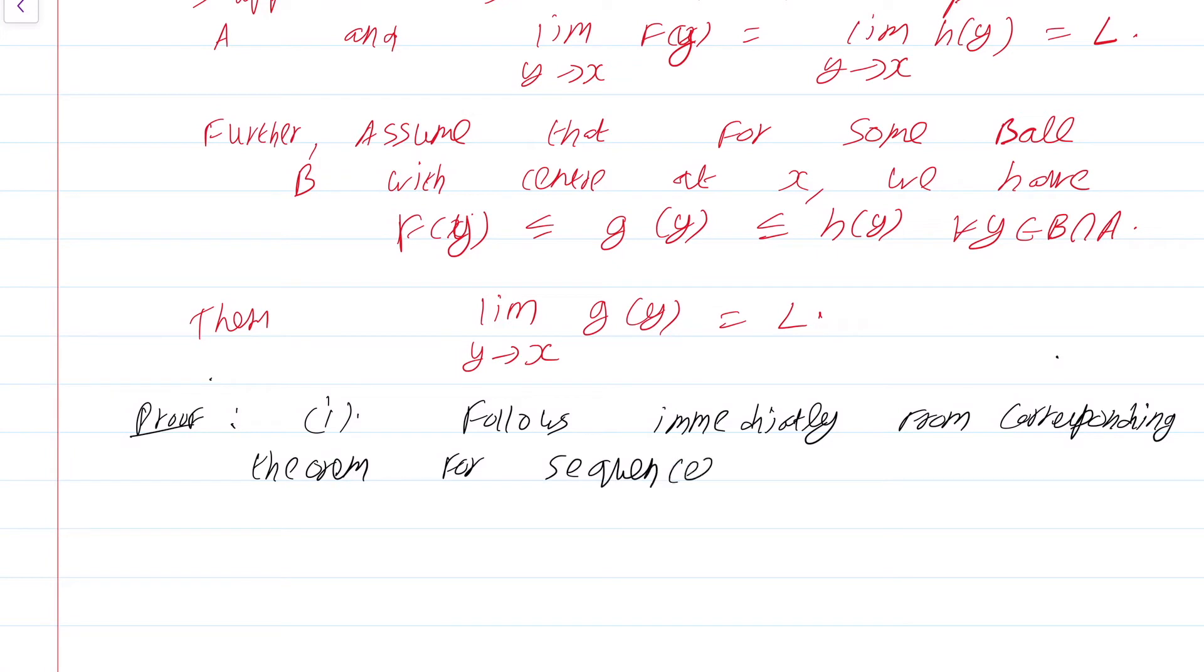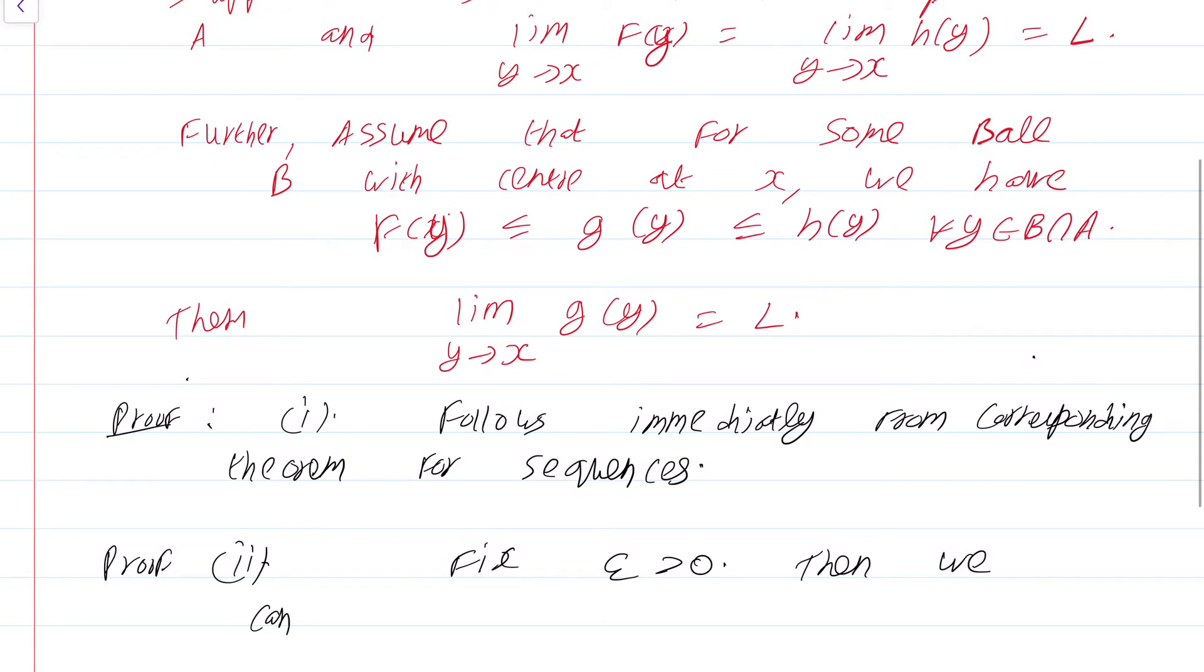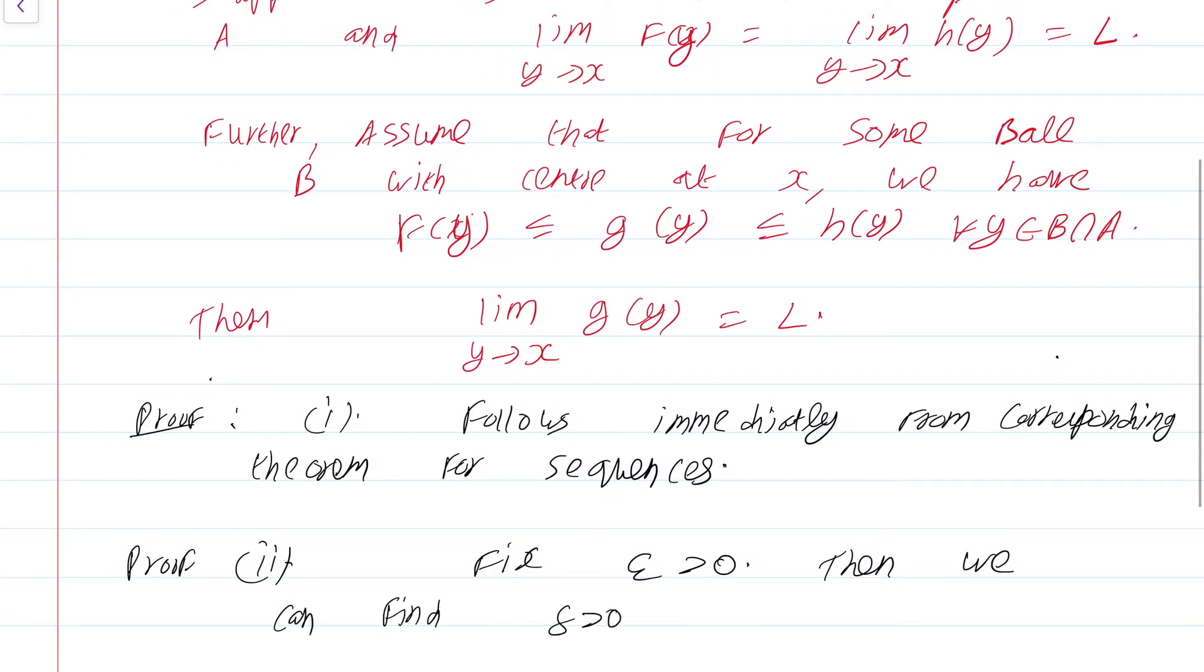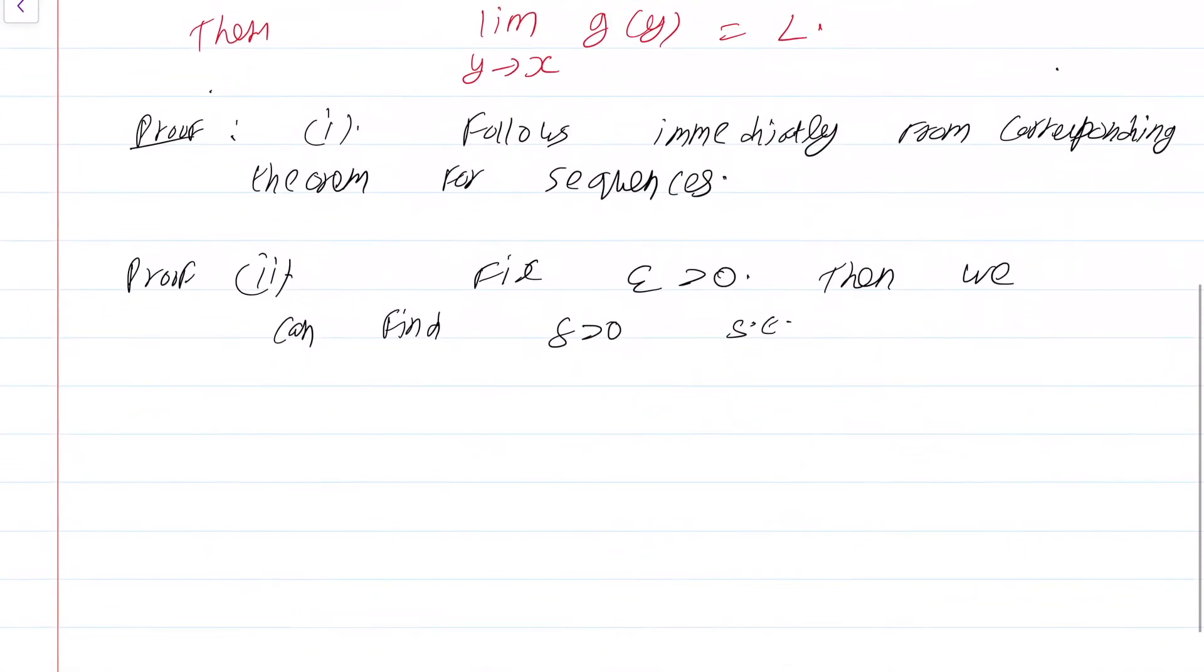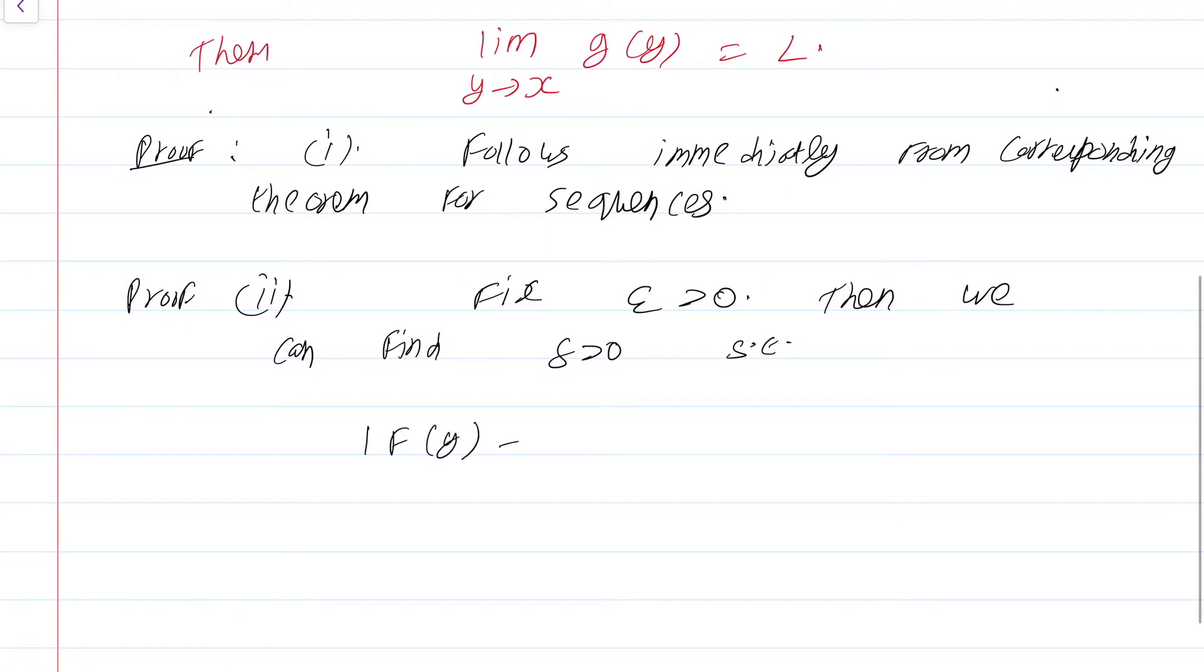Let us give another proof directly using epsilon delta. Proof 2: Fix epsilon greater than 0. Then we can find delta greater than 0 such that |f(y) - L| < epsilon and simultaneously |h(y) - L| < epsilon, whenever 0 < |x - y| < delta. This just comes directly from the epsilon delta definition applied to f and h, then taking minimum of the two deltas.